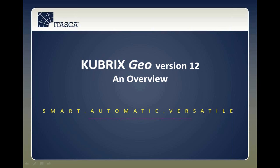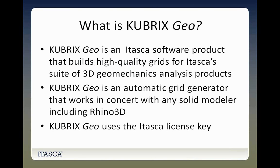Qubricks Geo version 12 is first and foremost the first release of Qubricks for geomechanics application, targeted towards the geomechanics trade. It is an Itasca software product that builds quality grids for 3D geomechanical applications for Itasca products — that is FLAC 3D, 3DEC, and certain applications of PFC 3D. One of the main characteristics of Qubricks Geo is that it works in concert with any solid modeler, and in our case we use Rhino 3D for its stability, ease of use, documentation, and low cost.